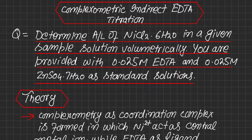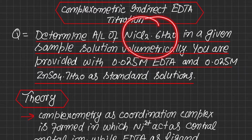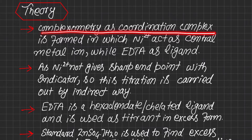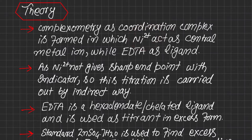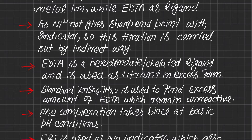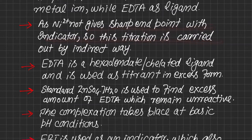In this particular titration we are using two standard solutions. The reason is the peculiar nature of nickel chloride — it is not estimated directly but by an indirect way. In complexometry, a coordination complex is formed. Nickel acts as the central metal atom or ion, whereas EDTA acts as a hexadentate chelated ligand. This titration is done by an indirect way because nickel does not give any sharp endpoint with the indicator.